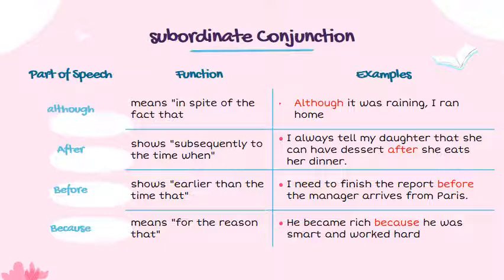'Before' means 'earlier than the time that.' Example: 'I need to finish the report before the manager arrived from Paris.' Something happened earlier — the deadline being the manager's arrival from Paris, so you have to finish the report before the manager arrives. 'Because' means 'for the reason that.' Example: 'He became rich because he was smart and worked hard.' Because is the reason that something happened — he became rich because he was smart and worked hard.